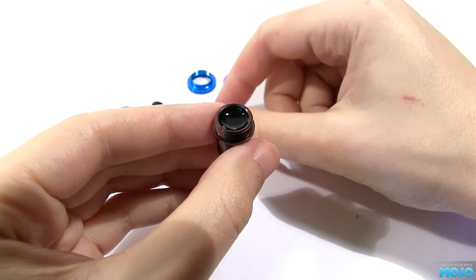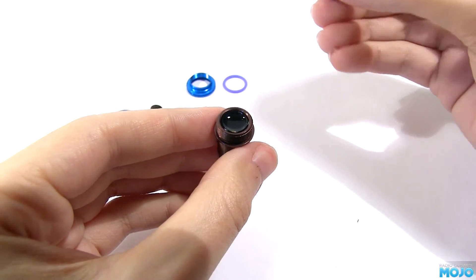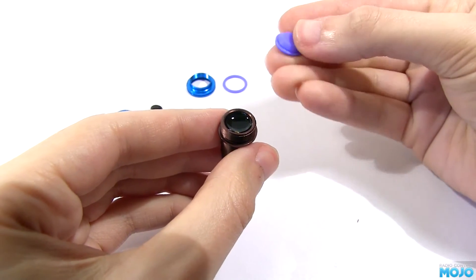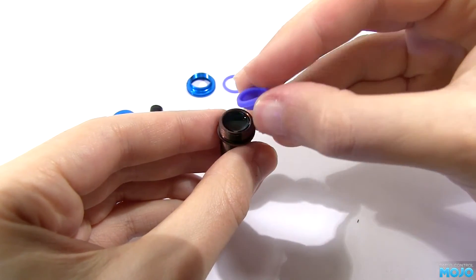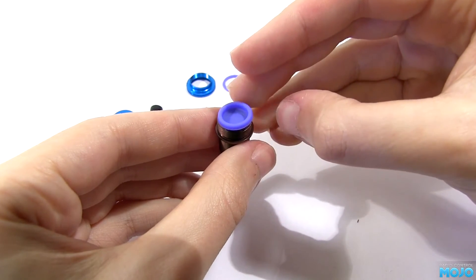When you're happy with the fluid level, pop one of the oil seals on the top with the dome down into the oil. If you get a bit of oil spillage over the edge, don't worry, just keep going and clean it up when the cap's on.